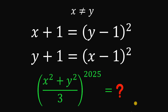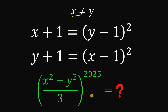Can you solve this math challenge? Here's the question. Given these two equations: x plus 1 equals y minus 1 raised to the power of 2, and y plus 1 equals x minus 1 raised to the power of 2, wherein x is not equal to y. The goal is to evaluate the expression x squared plus y squared, all over 3, raised to the power of 2025.